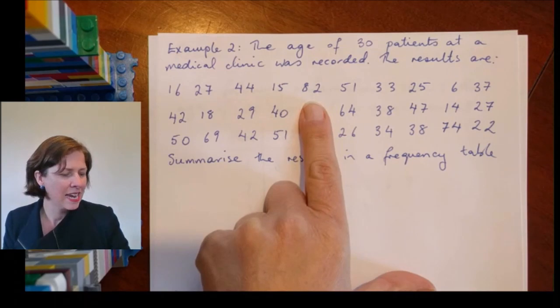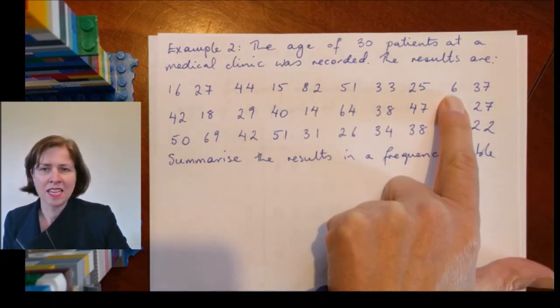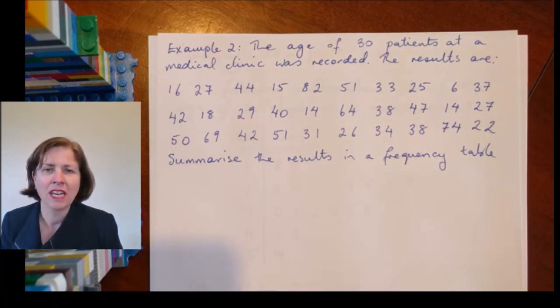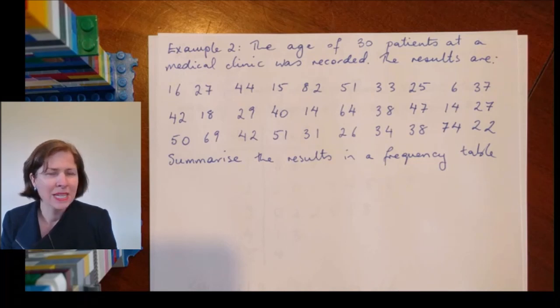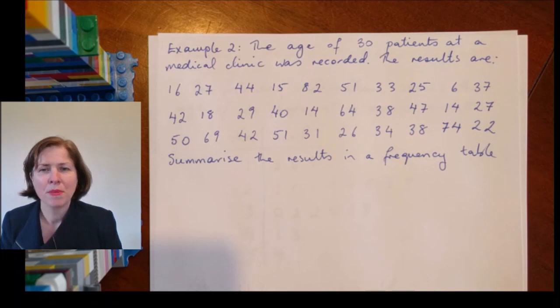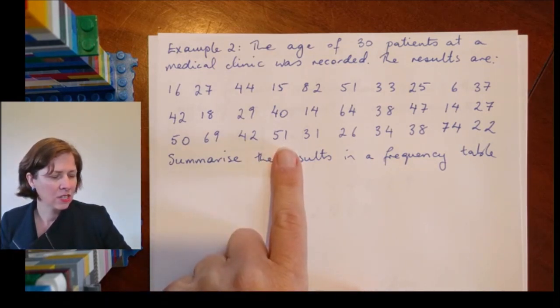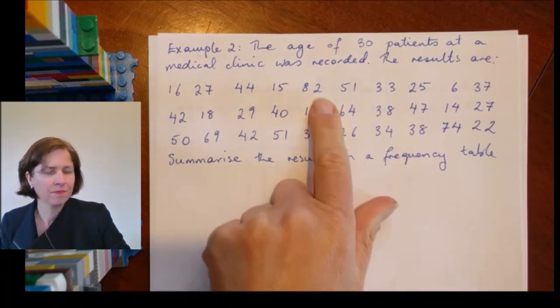I've got an 82 here and I've got a six here, so I'm going to have an awful lot of categories if I leave them all spread out. I'm certainly not going to count individual numbers. I'm not going to count how many sixes, how many sevens, how many eights, how many nines, because then I would end up with 82 rows because my largest number is 82.